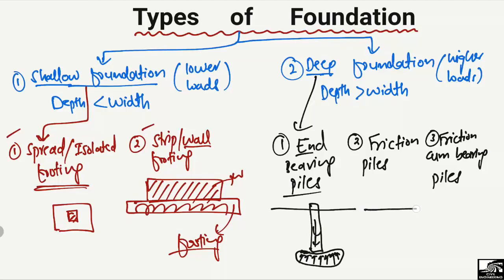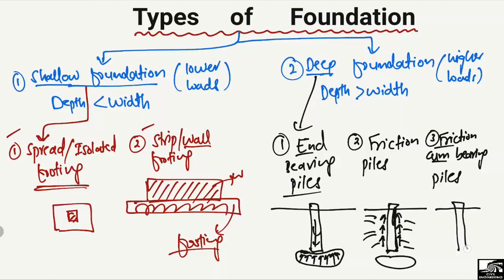For friction piles, the piles are provided beneath the surface but the rock strata here is very soft and cannot take the load. The whole load is resisted by friction between the pile and the surrounding soil, so these are known as friction piles. The third type — friction-cum-bearing pile — is a combination of both: half the resistance comes from the hard rock at the base (end bearing) and half from the friction between the soil and the pile.